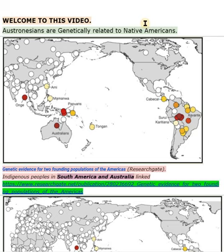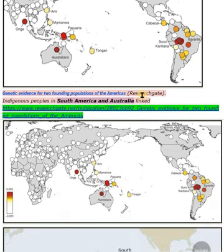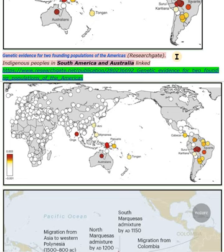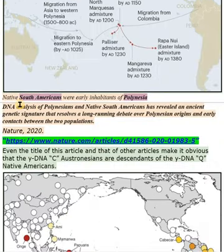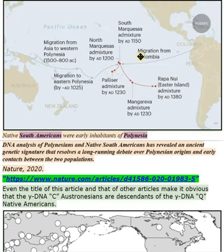Welcome to this video. Austronesians are genetically related to Native Americans. Genetic evidence for two founding populations of the Americas, ResearchGate. Indigenous peoples in South America and Australia linked. Native South Americans were early inhabitants of Polynesia. DNA analysis of Polynesians and Native South Americans has revealed an ancient genetic signature that resolves a long-running debate over Polynesian origins and early contacts between the two populations. Nature, 2020.